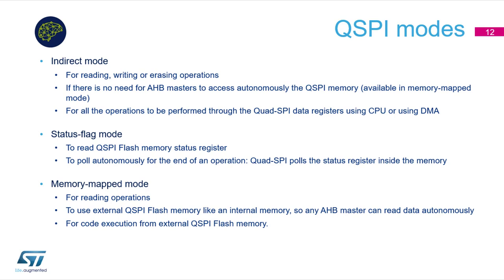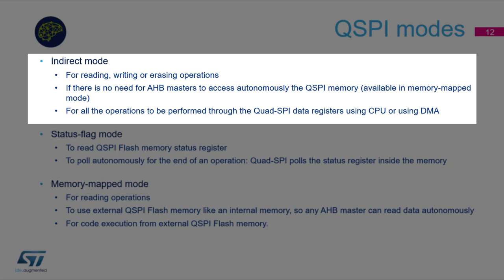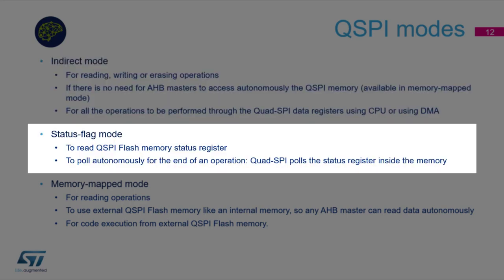Quad SPI can operate in three modes: indirect, status polling flag, and memory-mapped mode. Indirect mode is based on CPU register access mechanism, which must be fully handled by the user application since there is no autonomous access to memory. Status polling flag mode can read an external memory status register and poll autonomously for end of operation.